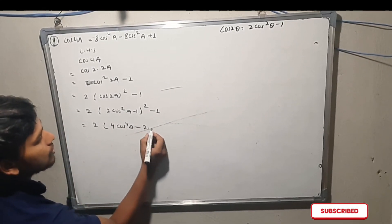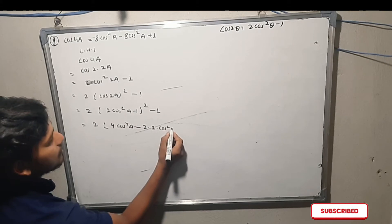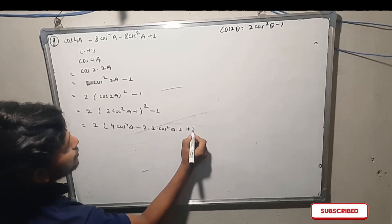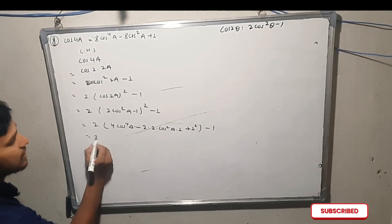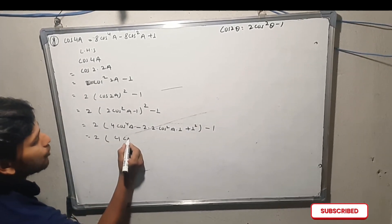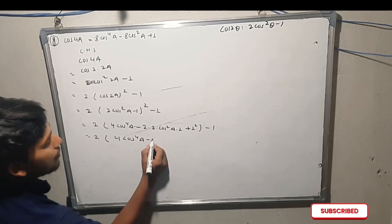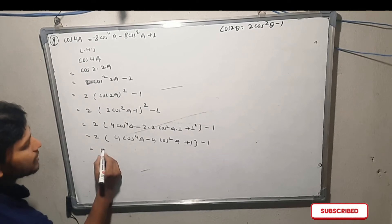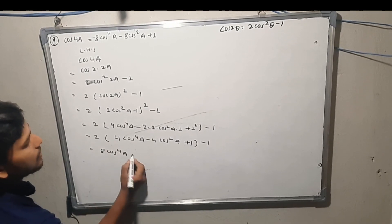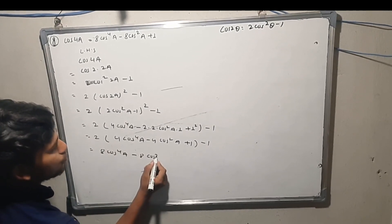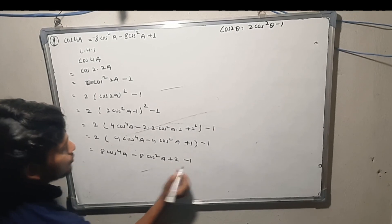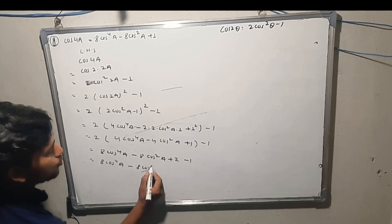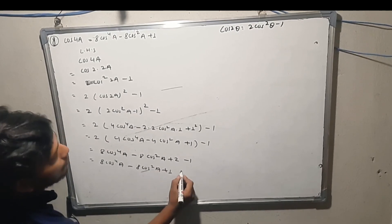2 times the quantity: a squared plus 2ab plus b squared, minus 1. Now 2 multiply by 4 cos 4a minus 4 cos squared a plus 1 minus 1. Now 2 multiply by 4 is 8 cos 4a. 2 times 4 is 8 cos squared a plus 2 minus 1. So 2 minus 1 is equal to 8 cos 4a plus 8 cos squared a plus 1.